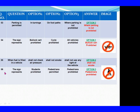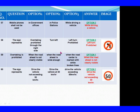Question 56: The sign represents. Option 1: Students prohibited. Option 2: Pedestrian prohibited. Option 3: Pedestrians prohibited. The right answer is Option 3: Pedestrians prohibited. Question 57: Mobile phones shall not be used. Option 1: In government offices. Option 2: In police stations. Option 3: While driving a vehicle. The right answer is Option 3: While driving a vehicle.